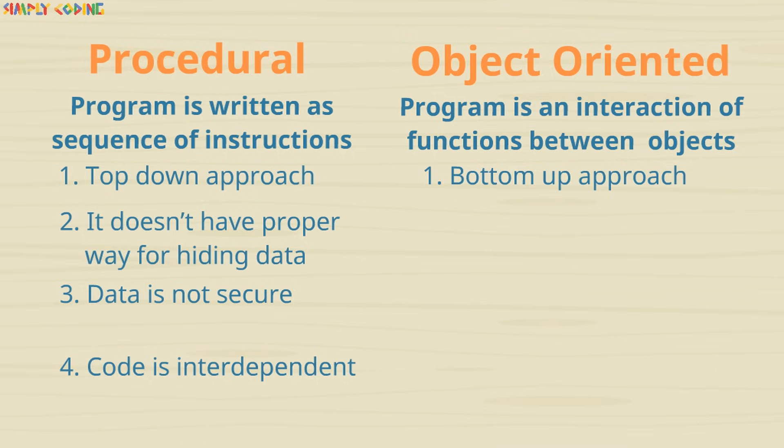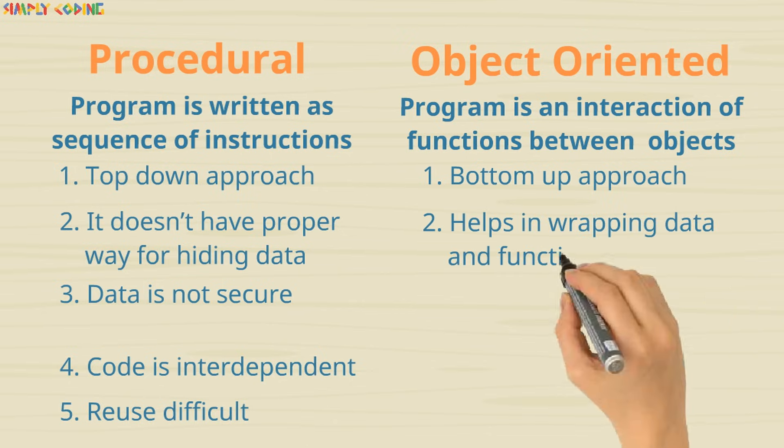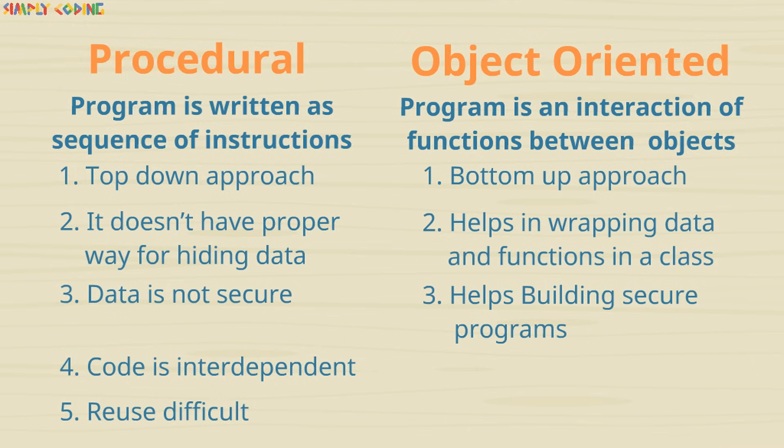Code is interdependent which makes reuse difficult. Object oriented languages model real world so is easier to relate to. It helps in wrapping data and functions in a class which helps build secure programs. Code is modular and can be extended for reuse.